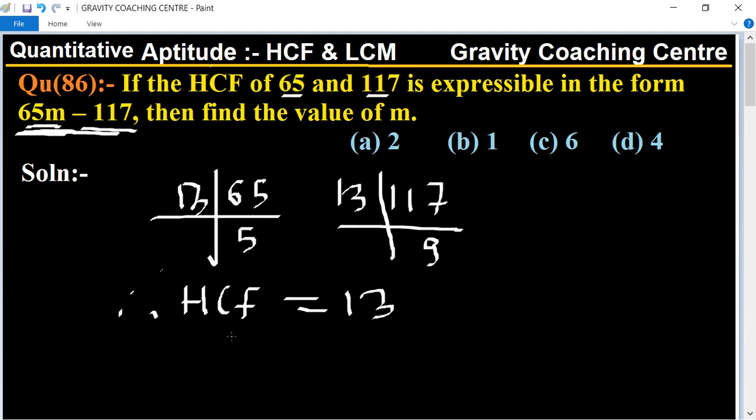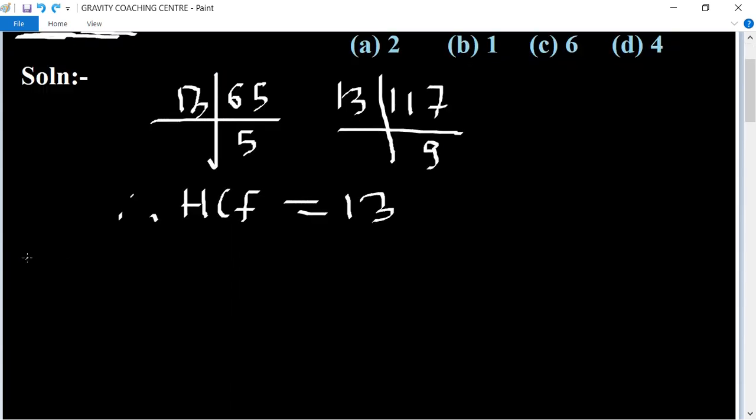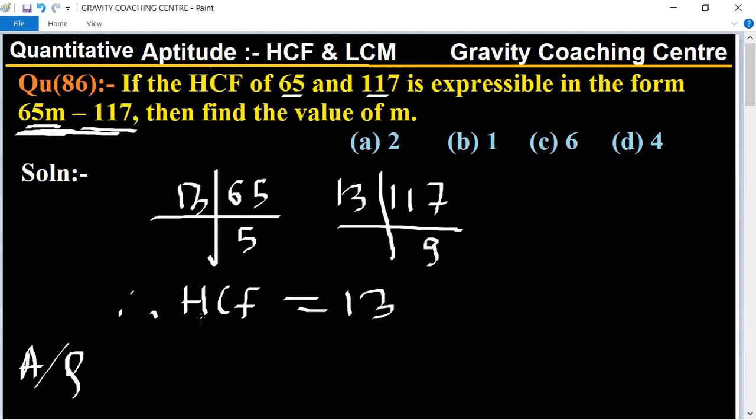According to the question, we can write the HCF in the form - according to the question, the HCF is expressible in the form 65m minus 117 equals 13.